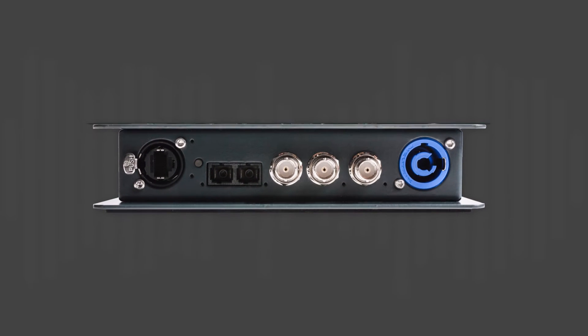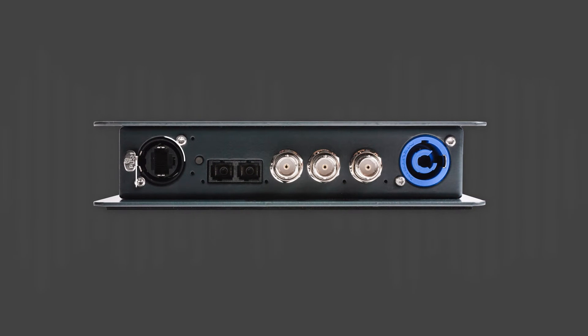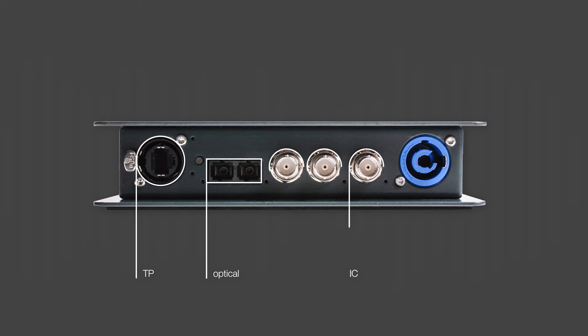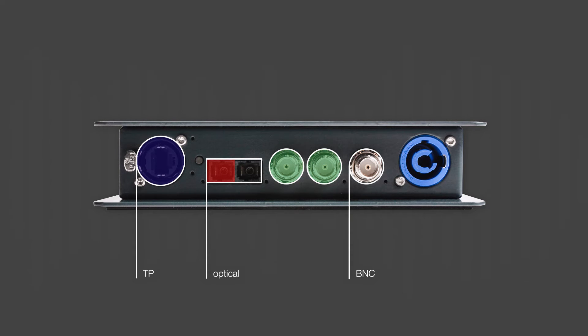ML-MeO is equipped with one input each for twisted pair, optical, and BNC. There's one twisted pair and one optical output, and two BNC outputs that will always carry the same signal.